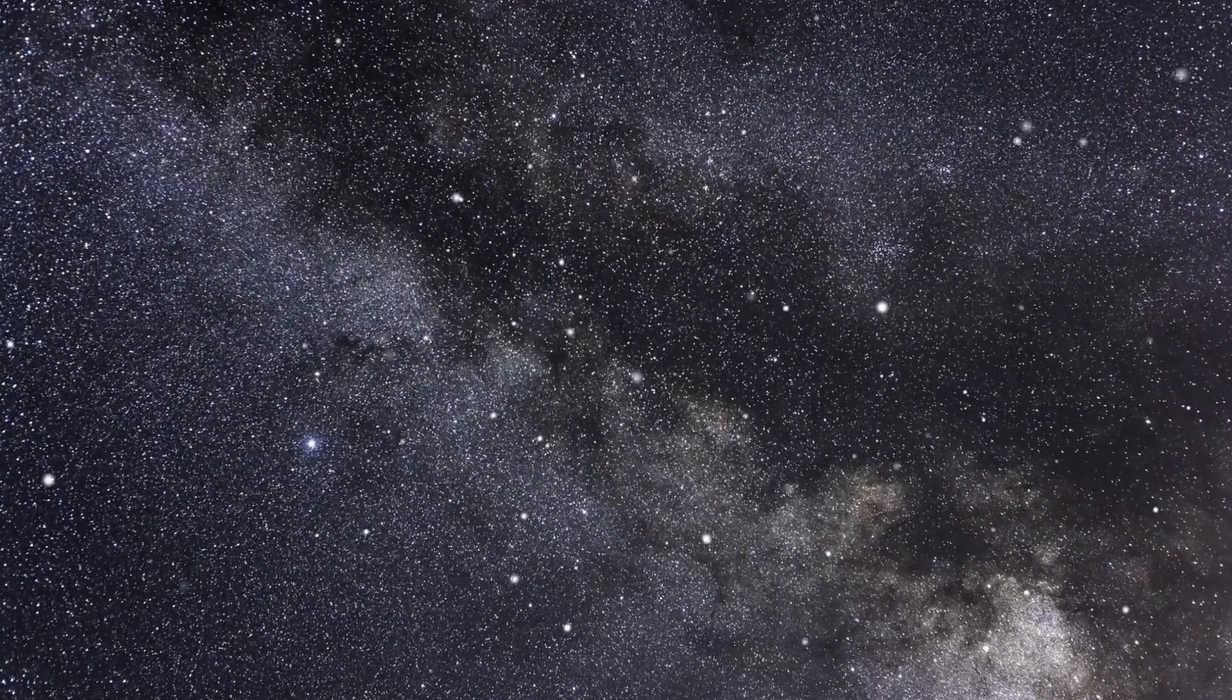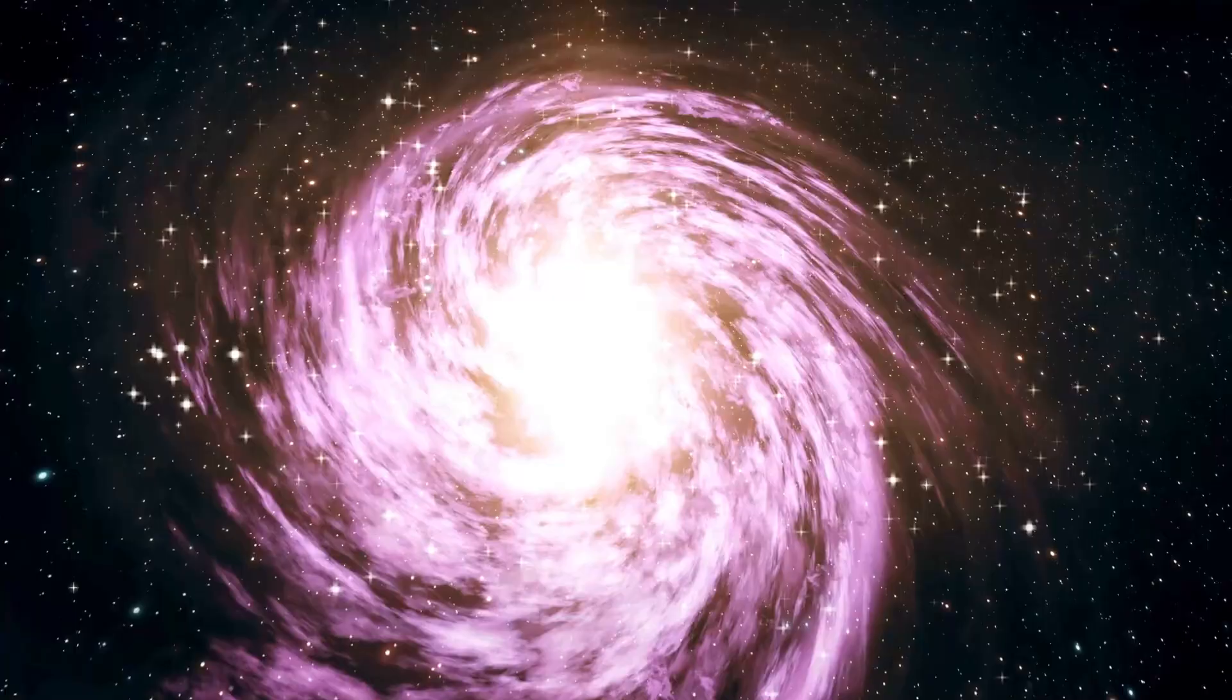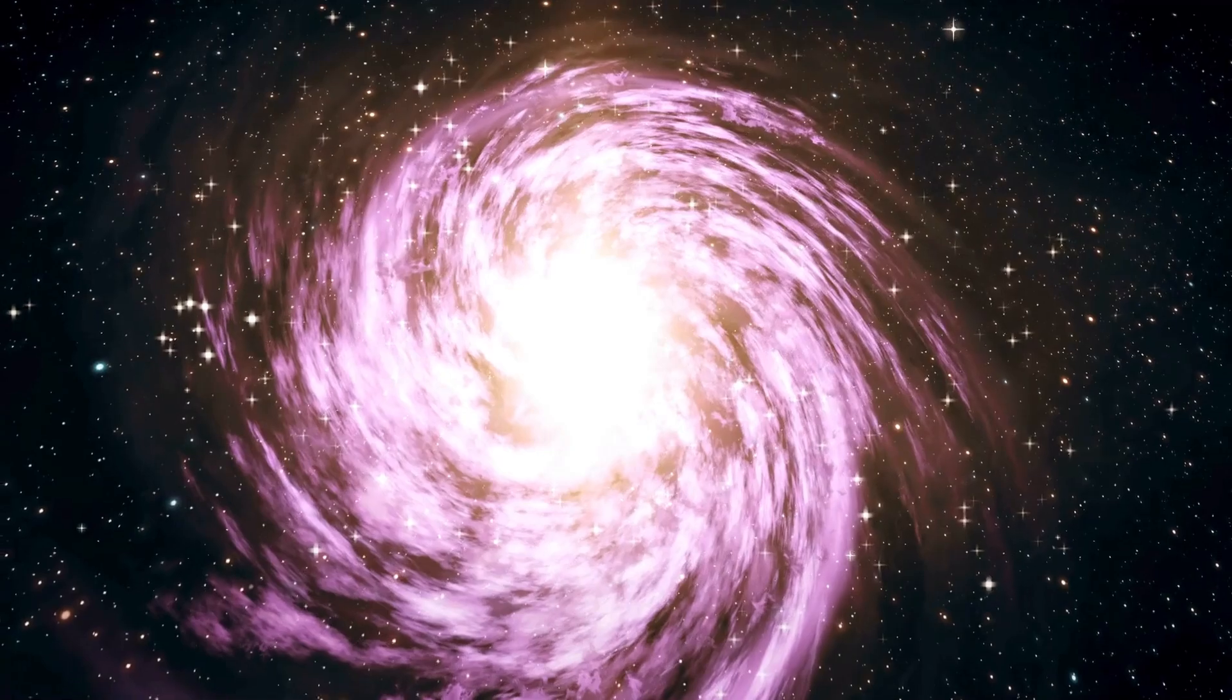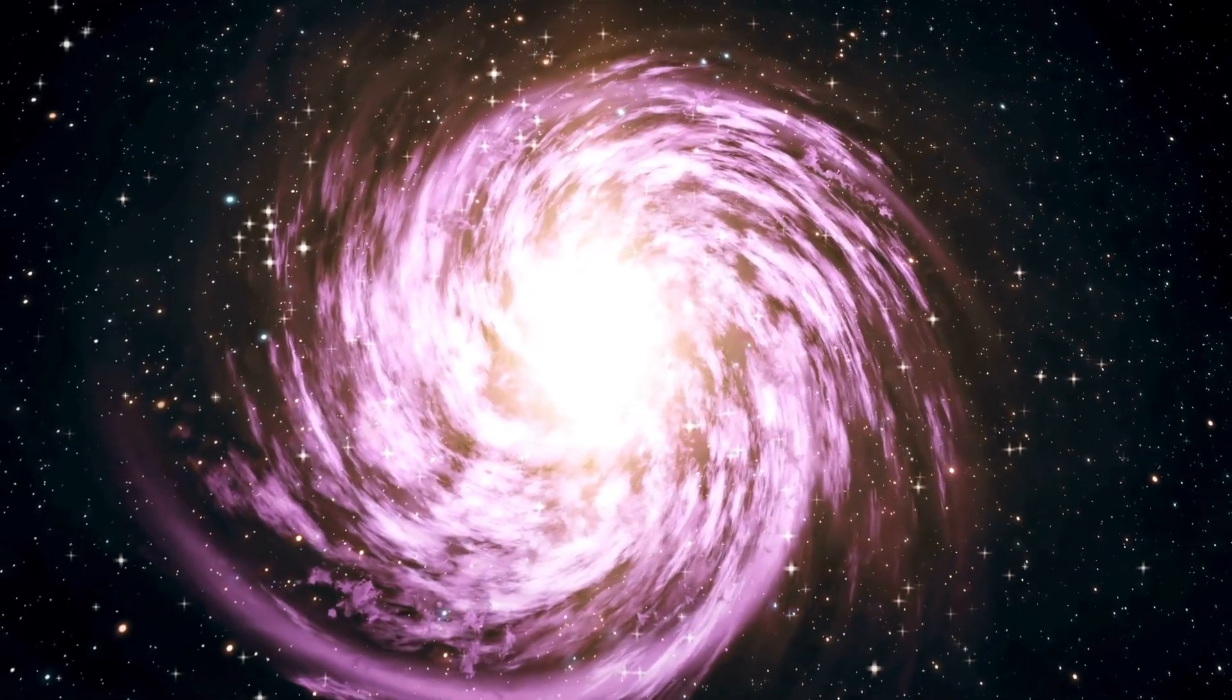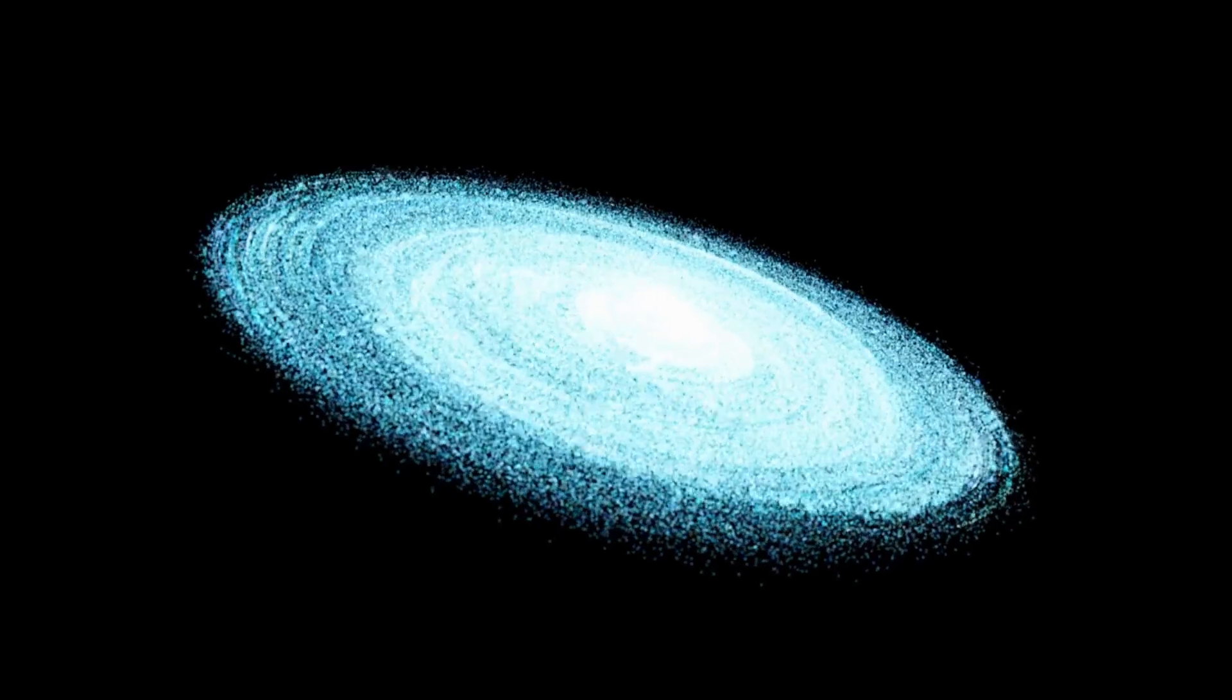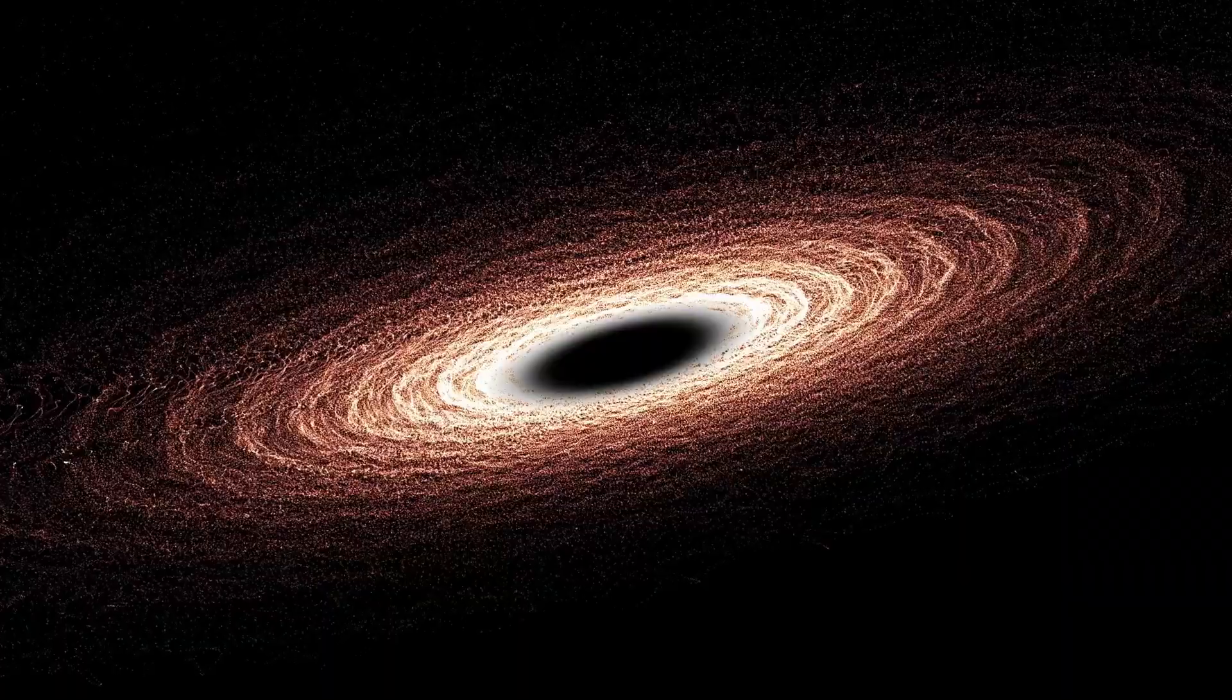In a distant corner of the cosmos, roughly 200 light-years away, lies an ancient star named H-140283, nestled near the Libra constellation. This stellar traveler moves briskly through space, offering intriguing glimpses into its tumultuous past.